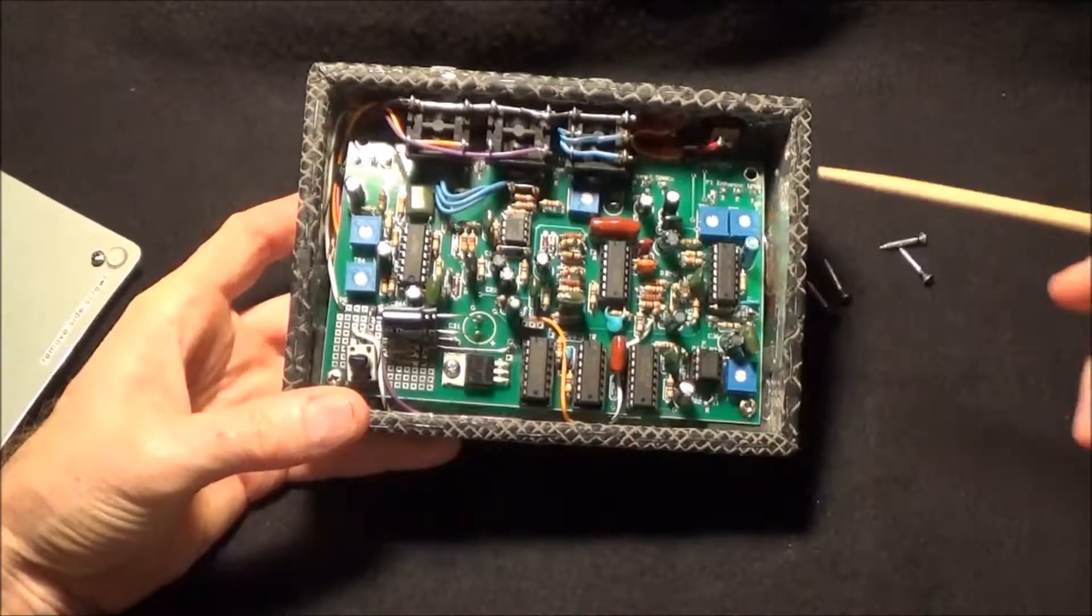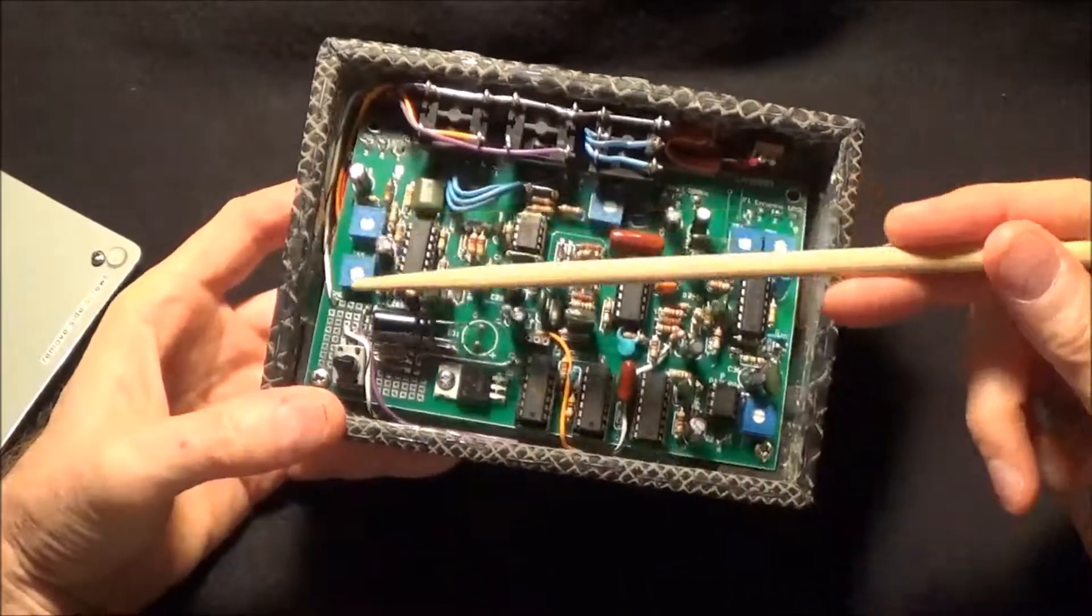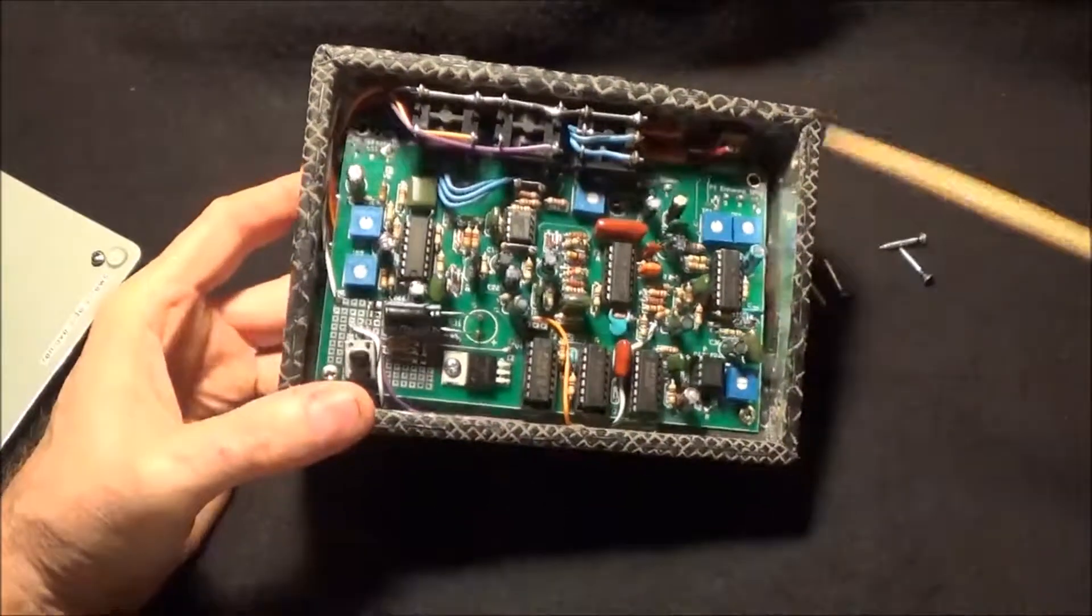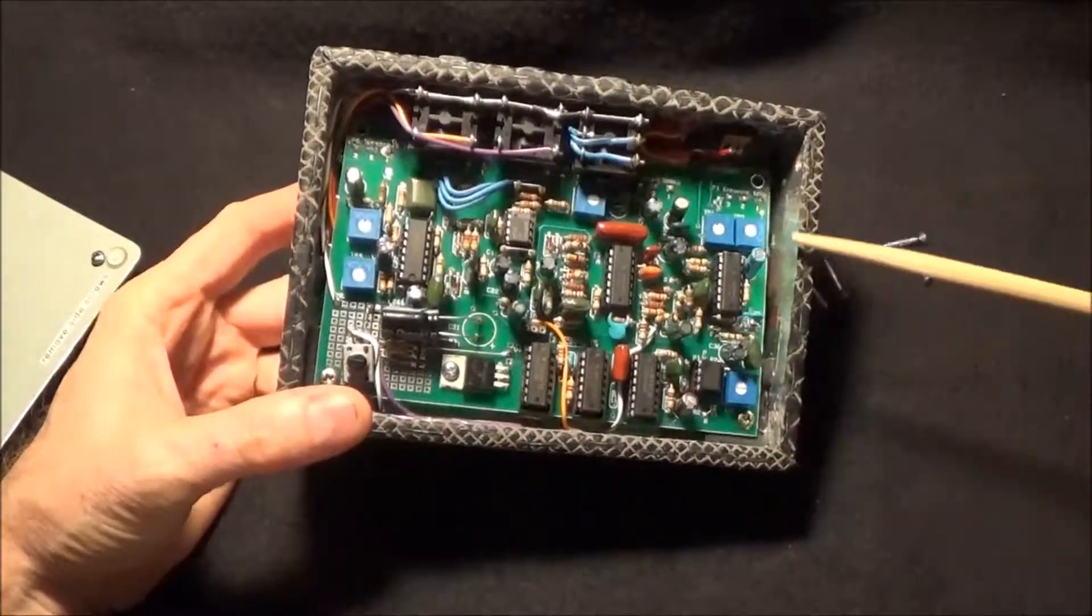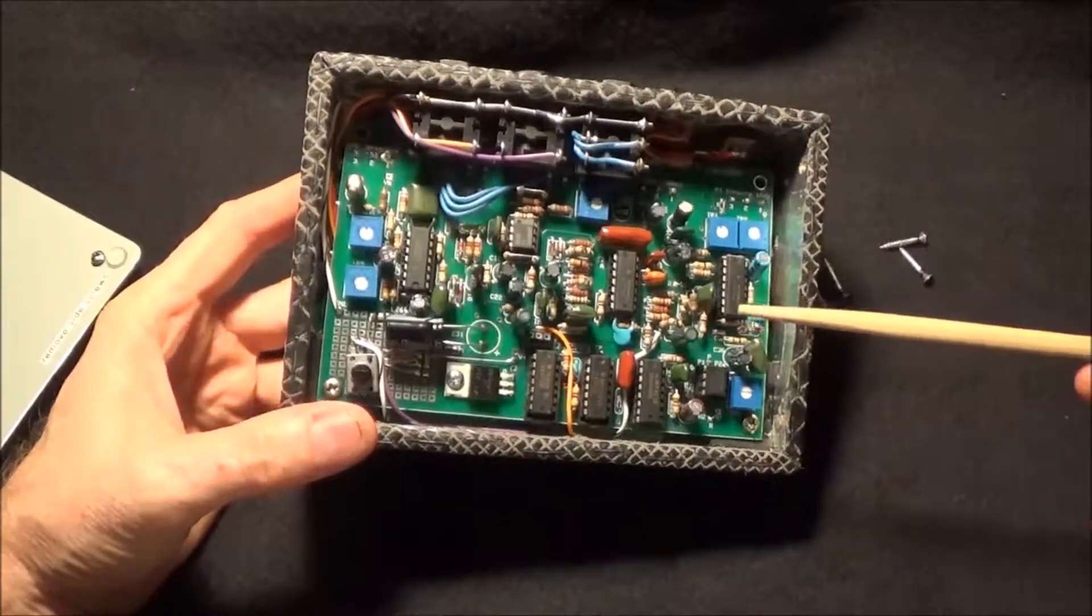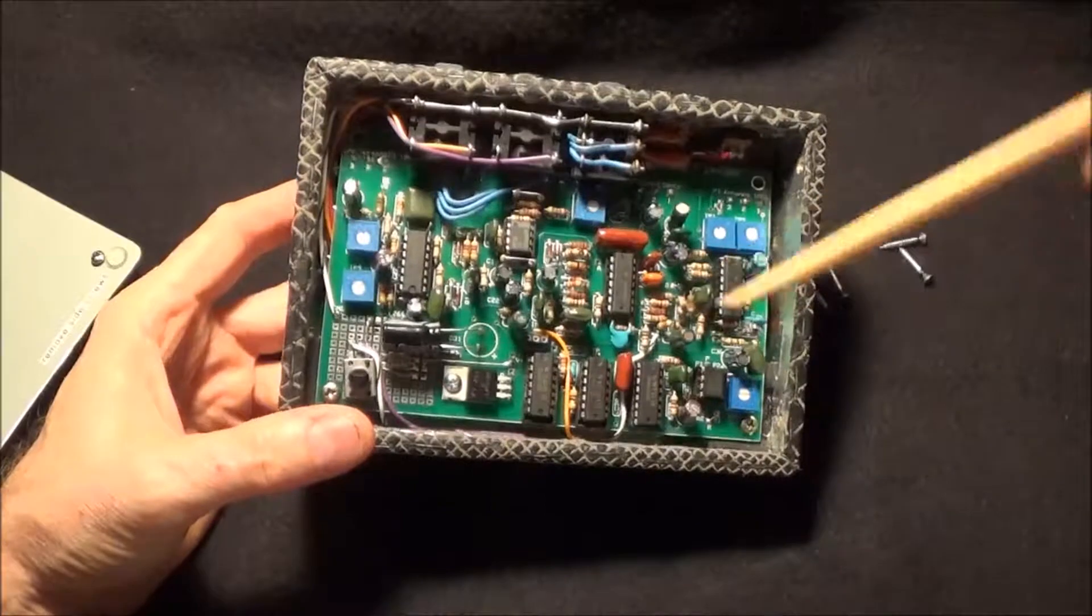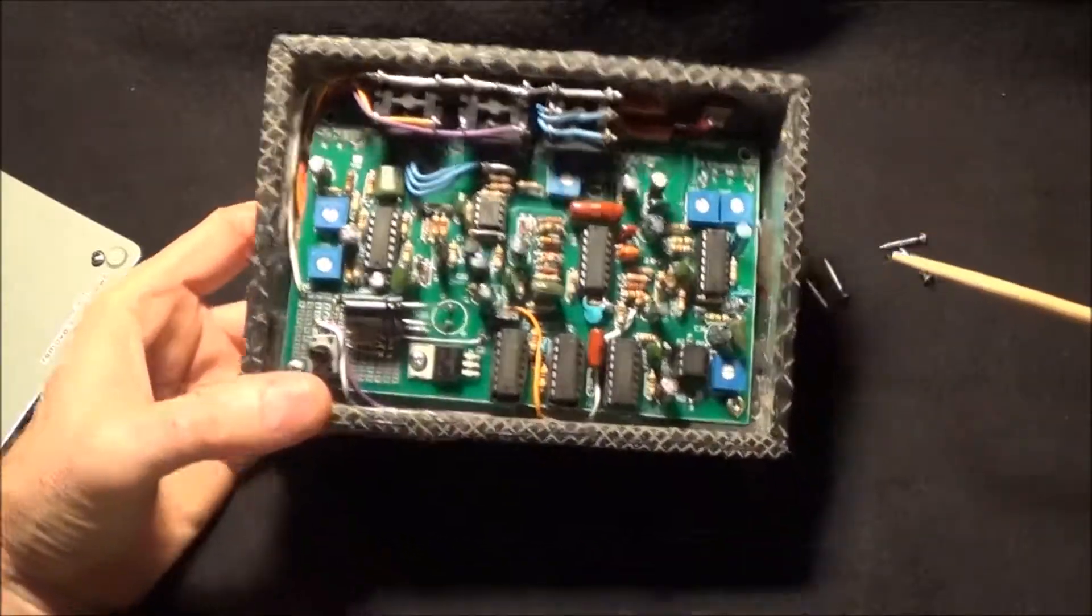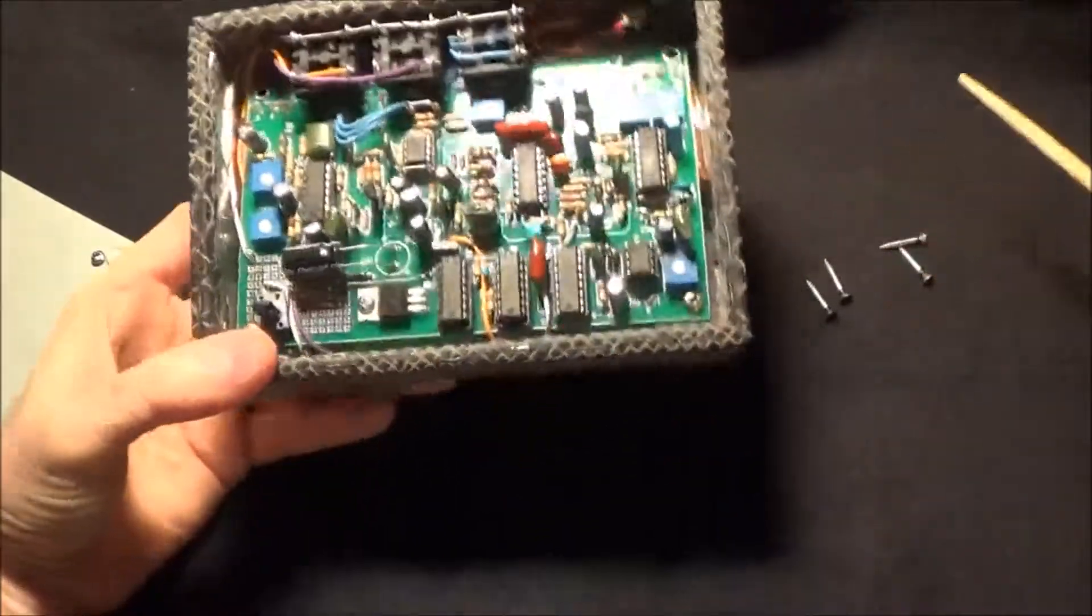But I didn't like that idea because the trim pots are too hard to get to. You have to pull out the whole PCB to make adjustments, so I always thought that was a pain in the butt on the real ADAs. So basically I just mirrored everything, and this runs off of 18 volts DC.